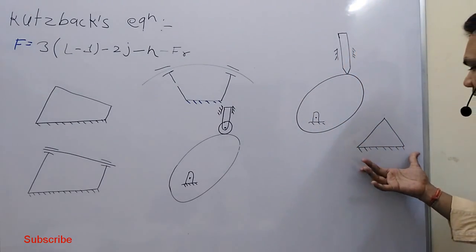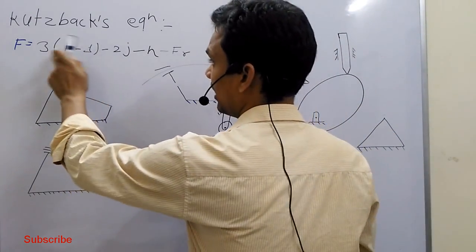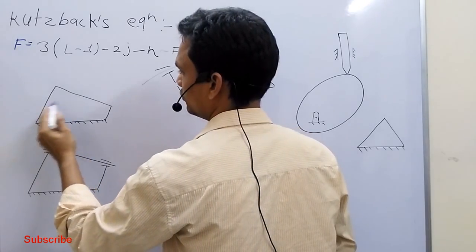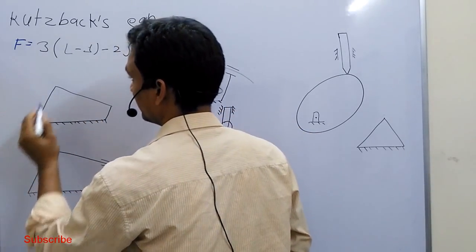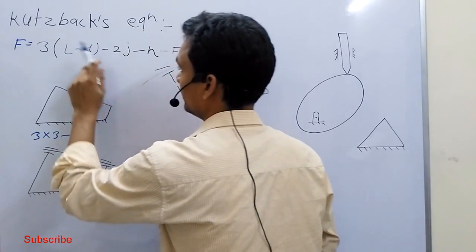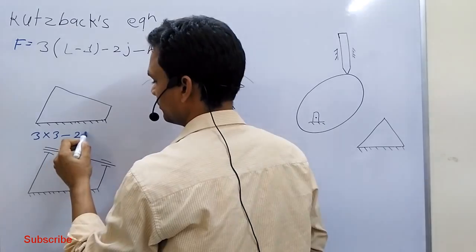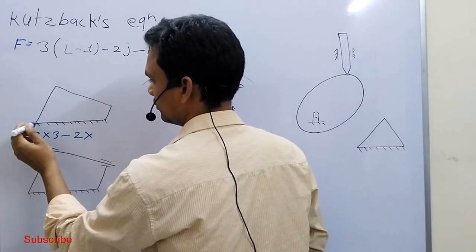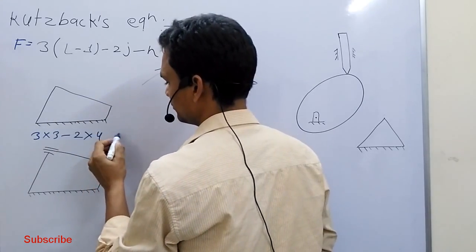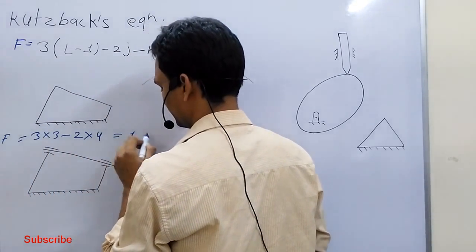After we consider a case of a frame or superstructure, I put the values directly. Number of links: one, two, three, four. So directly, L minus one: four minus one equals three. Minus two. Number of joints: one, two, three, four. And no higher pair. So the degree of freedom of this system will be one.